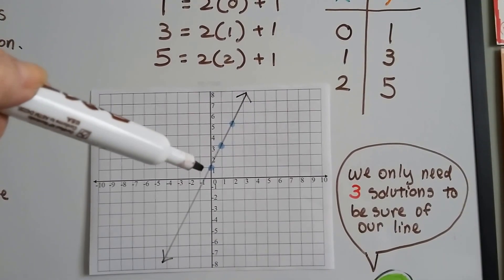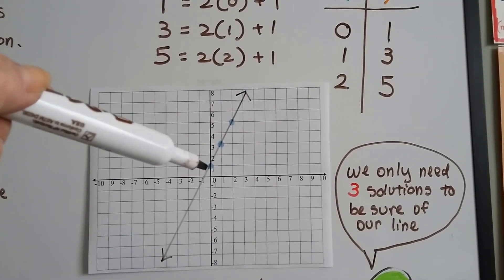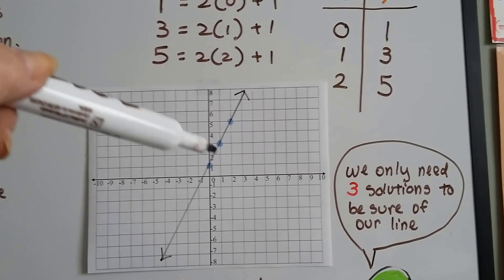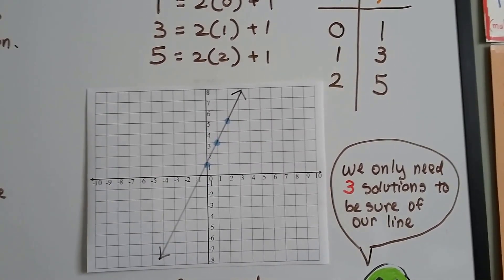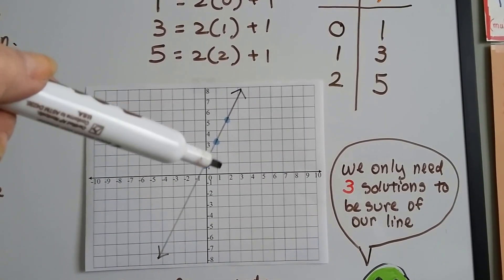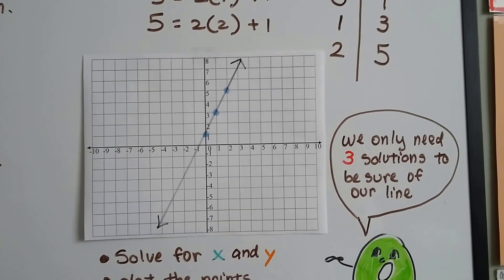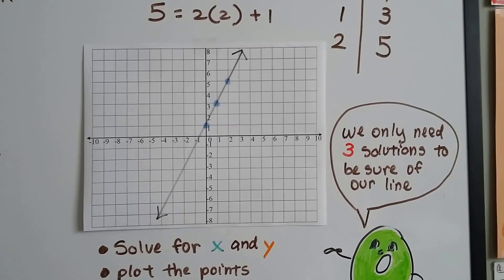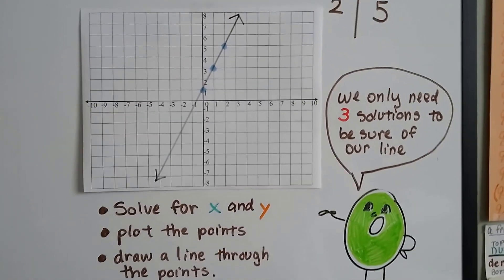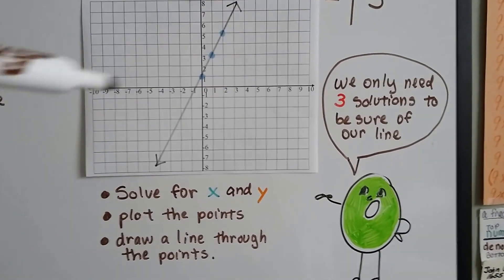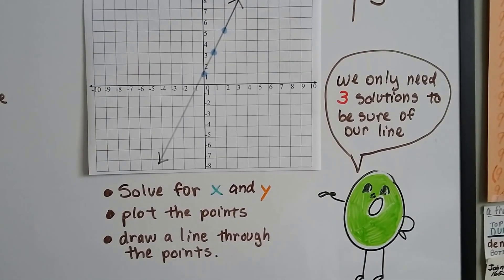We got a 0, 1, that would be right there, 0 on the x, 1 on the y. And then 1 for x and 3 for y would be right there. And then 2 for x and 5 for y would be right there. So we've got our three solutions to make our line. We solved for x and y. Now we plotted the points.